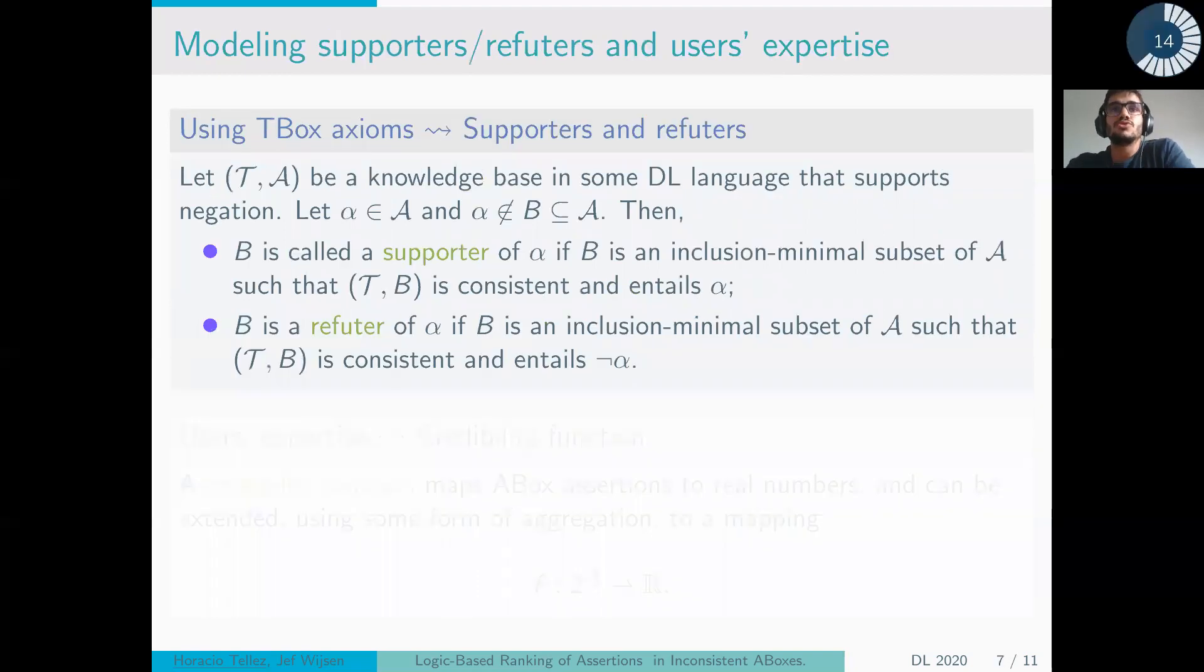For the use of the T-box, we define what supporters and refuters are. Informally, a supporter is an inclusion-minimal subset of the A-box such that it is consistent and also it implies α, where α is an assertion in the A-box. A refuter is defined in the same way, only that it implies ¬α. We can see supporters and refuters as arguments, well-founded arguments that are in favor and against assertions.